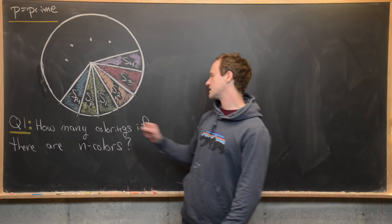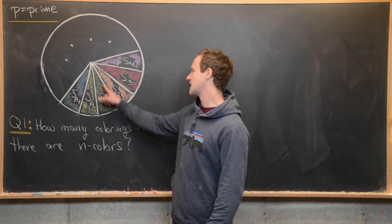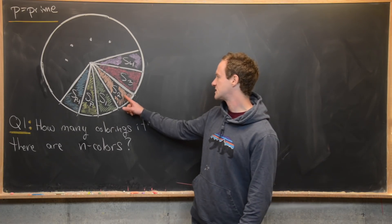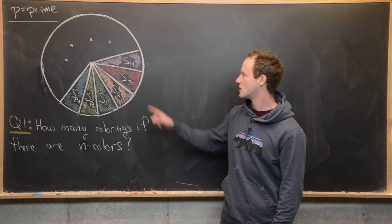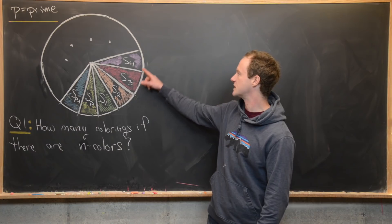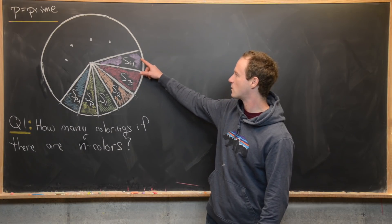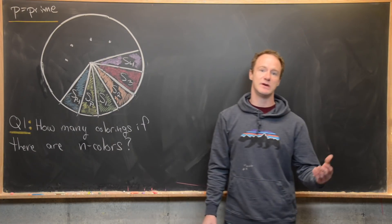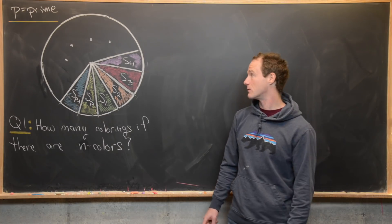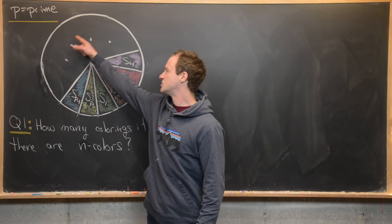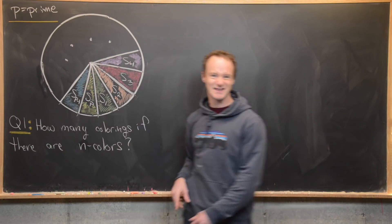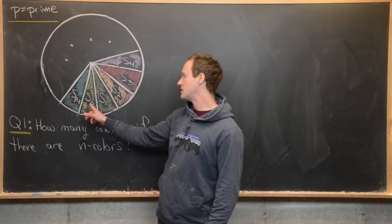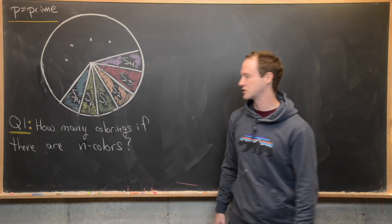I've drawn it this way. Here is sector one, which is shaded green. Here is sector two, which is this peach color. Sector three is red. Sector four is purple. And since P is a prime number, we put some dots to indicate we're going around the circle, and then sector P minus one and sector P.